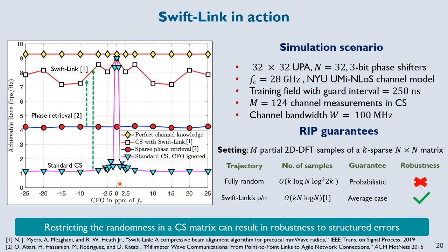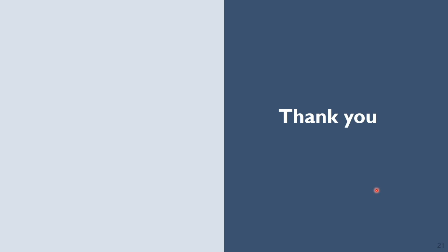As shown in this figure, standard compressed sensing fails even when CFO is just about 1 ppm. However, SwiftLink results in much better performance than phase retrieval or standard compressed sensing over a wide range of CFO errors. In our paper, we also derived restricted isometry property guarantees for the compressed sensing matrix corresponding to SwiftLink's trajectory. While fully random trajectories require just about order log(N) samples and satisfy RIP, they are not robust to CFO errors. SwiftLink's trajectory requires order N*log(N) samples and satisfies restricted isometry while being robust to carrier frequency offset errors. Thank you for watching and I'd be happy to take any questions regarding my paper.